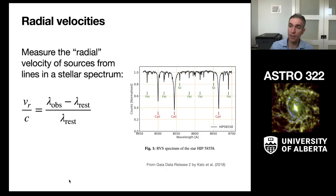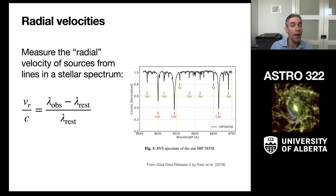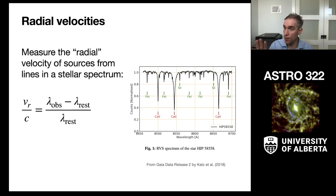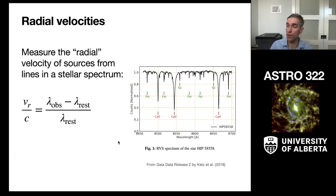Gaia also has a spectrometer measuring in the band 845 to 870 nanometers (8450 to 8700 angstroms). This is a particularly line-rich portion of the spectrum, so stars over a range of temperatures and abundances will have spectral lines there. Gaia measures their observed wavelength with high precision relative to their known wavelength, and uses the Doppler formula to infer the radial velocity.